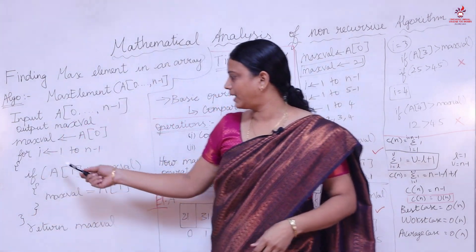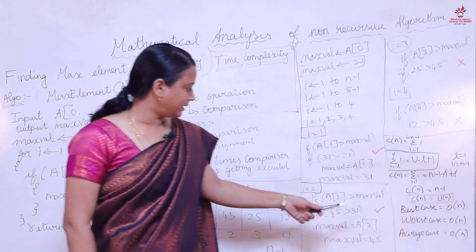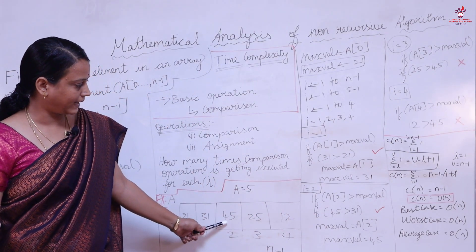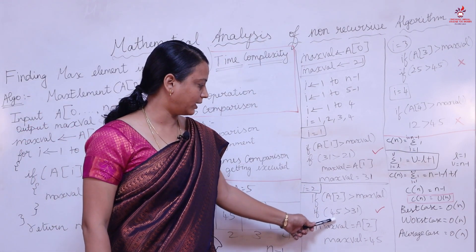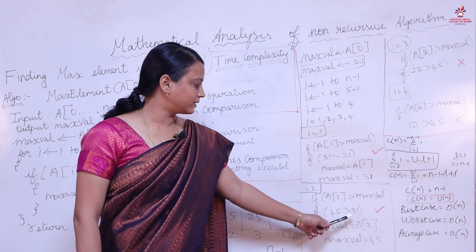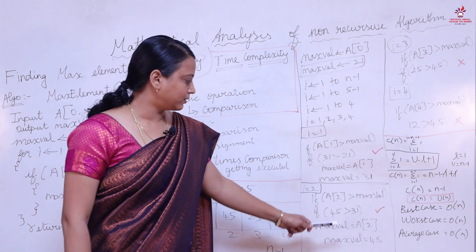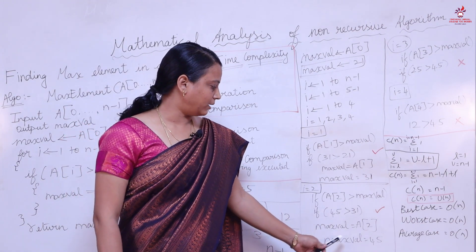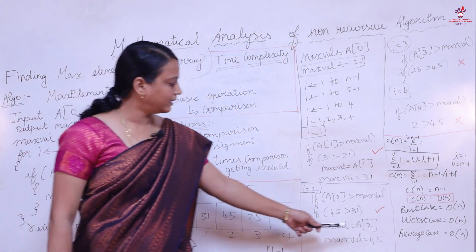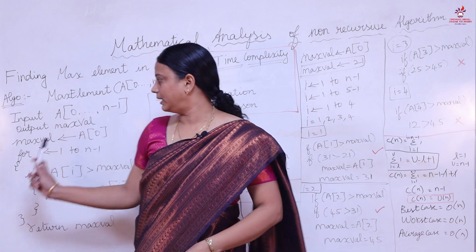The for loop executes again. In the second iteration, i = 2, so we check a[2] which holds the value 45. The previous max_value is 31. We check: is 45 greater than 31? The condition is true, so we assign 45 to max_value. Now max_value holds 45.